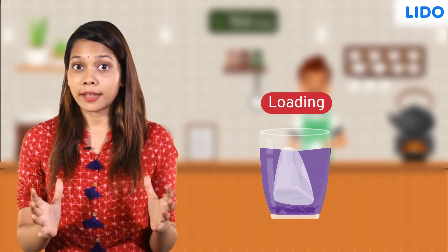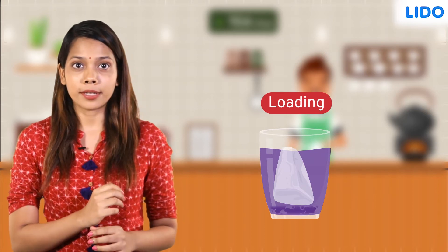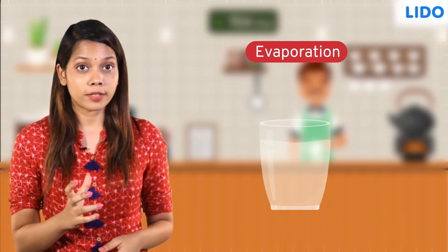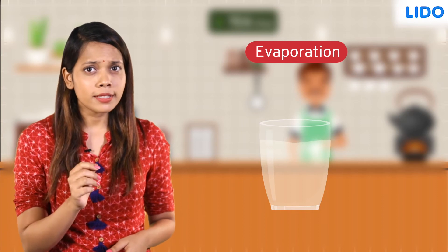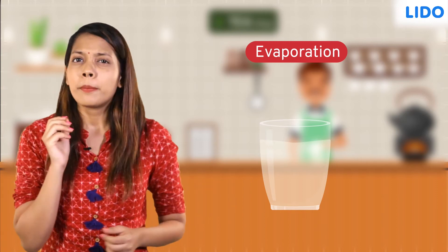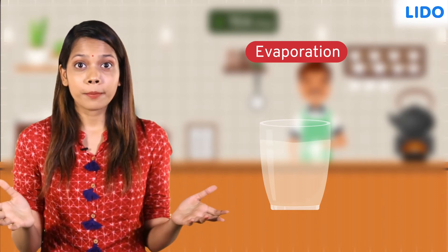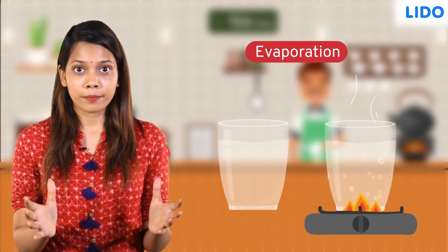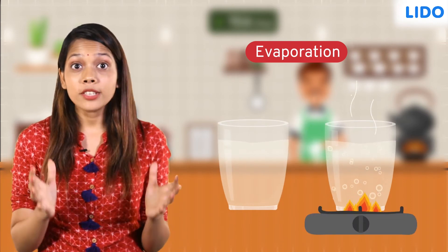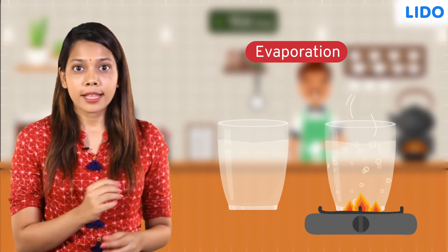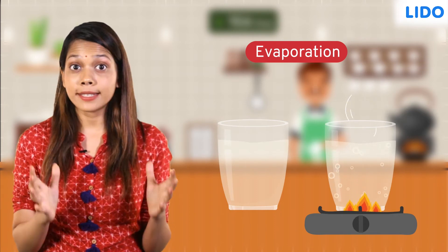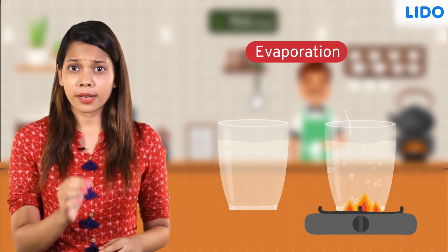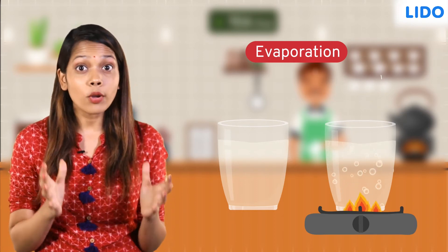Let's learn about another method to separate solid from liquids: evaporation. This is a glass of salt water. Can you see the salt in the glass? No, because it is completely dissolved. To separate the two we can heat the water. The liquid water will change to gaseous state and evaporate, leaving the solid salt crystals behind. Evaporation is mostly used to separate soluble solids that dissolve in a liquid.